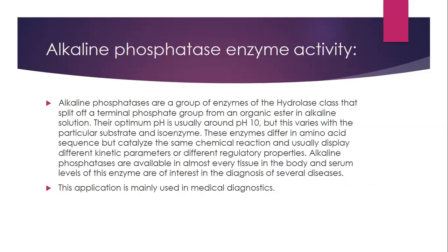Alkaline phosphatase enzyme activity also falls under chemical kinetics. These are a group of enzymes of the hydrolase class that split off a terminal phosphate group from an organic ester in alkaline solution. Their optimum pH is usually around pH 10, but this varies with the particular substrate and isoenzyme. These enzymes differ in amino acid sequence but catalyze the same chemical reaction. Alkaline phosphatases are available in almost every tissue in the body, and serum levels are of interest in the diagnosis of several diseases. This application is mainly used in medical diagnostics.